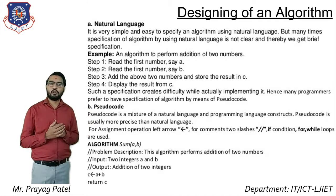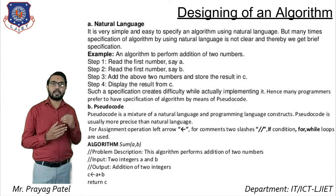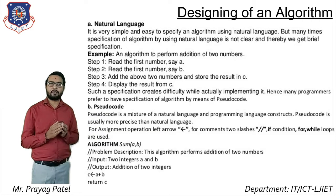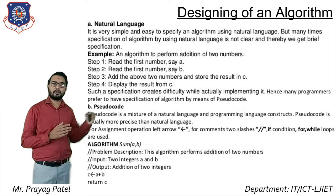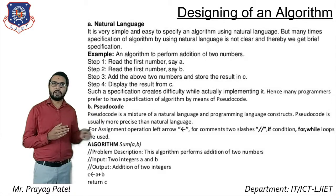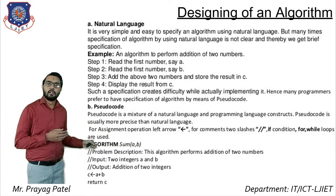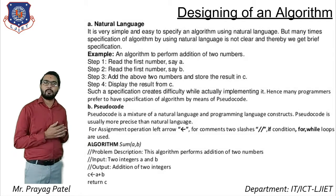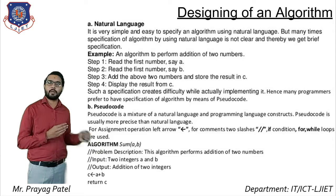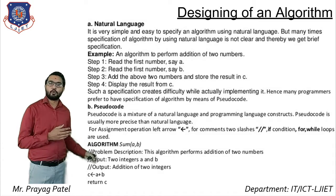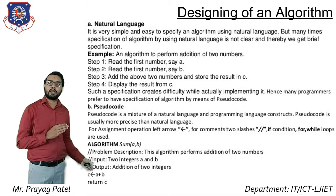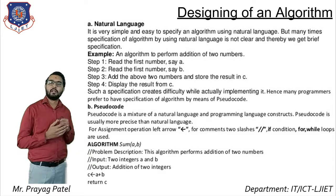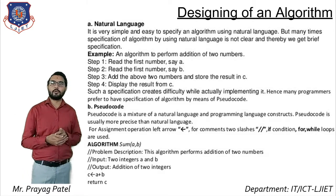The second way is pseudocode, which is a mixture of natural language and programming language. For assignment use the left arrow, for comments use double slash, and you can use if and while constructs. For example: Algorithm Sum(A, B) — problem description: perform addition of two numbers; input: two values A and B; output: addition of two values; body: C ← A + B, return C.